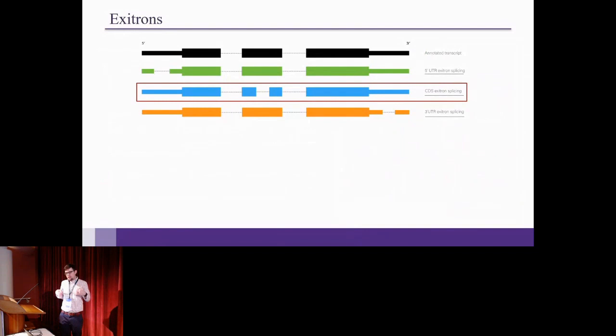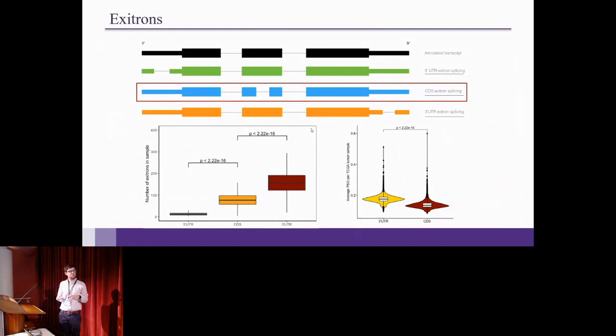So this study has one main limitation, which is that they found exotrons in coding regions only, and exotrons can be found in any region in the transcript. So you can find 5' UTR exotrons and 3' UTR exotrons. And it turns out that when you look for 3' UTR exotrons instead of just CDS exotrons, you'll find that actually there's more abundant exotrons in the 3' UTR regions than in the coding regions. And this is kind of surprising because we only sort of think about alternative splicing events when it affects protein coding regions. So it's kind of surprising to see that this splicing event is actually more abundant in the 3' UTR.